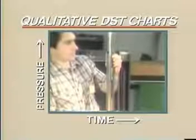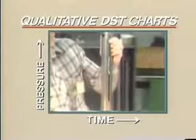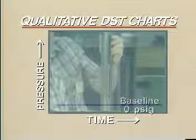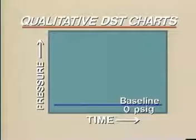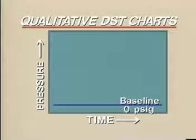Before the test assembly is run into the hole, the tester loads the chart into the recorder and draws the baseline on the chart using the recorder stylus. This represents zero PSIG for the mechanical pressure gauge. The clock is then started, the tool assembled and started in the hole.